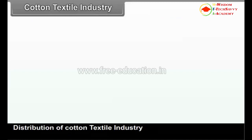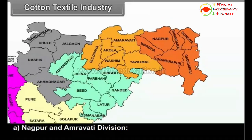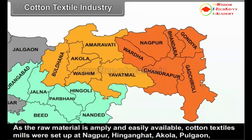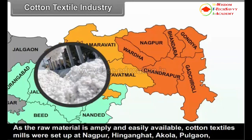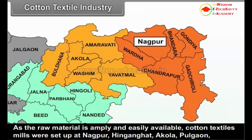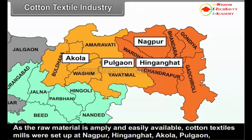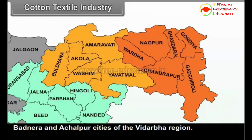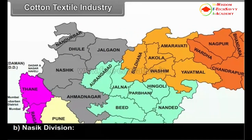Distribution of cotton textile industry. A. Nagpur and Amravati Division: As the raw material is amply and easily available, cotton textile mills were set up at Nagpur, Hinganghat, Akola, Pulgao, Bhadnera and Achalpur cities of the Vidarbha region.